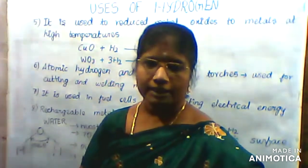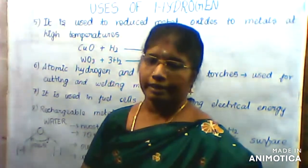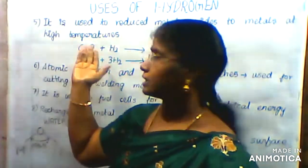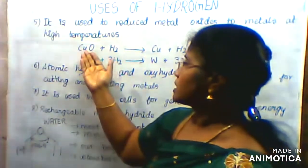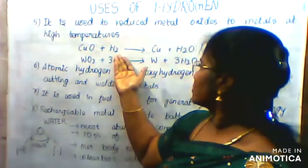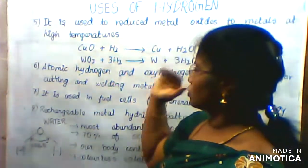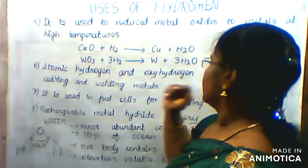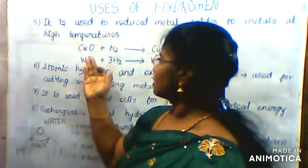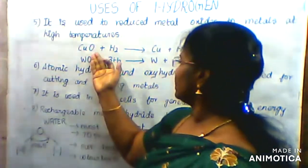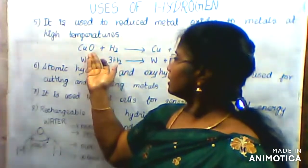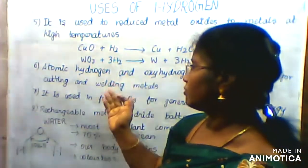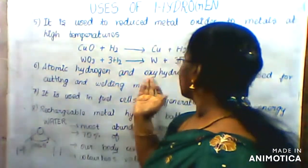Metal oxides — how to use hydrogen at high temperatures. CuO (copper oxide) plus H₂ gives Cu plus H₂O. Tungsten trioxide plus H₂ gives tungsten plus H₂O. Metal oxides are reduced by hydrogen at high temperatures.